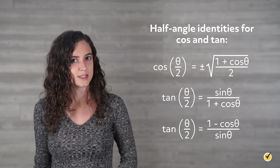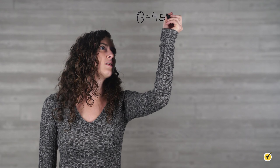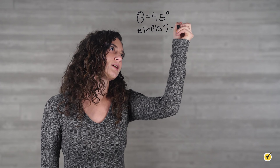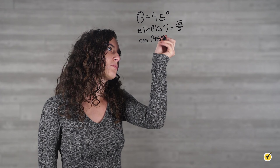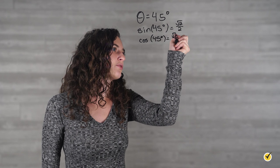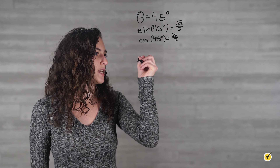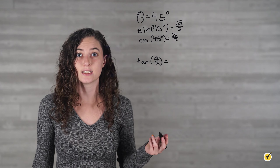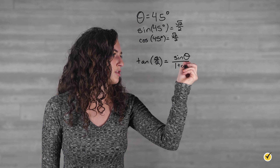Once again, our process is the same. Write down the information we're going to need, and then plug that information into our formula. We'll need to find the sine of theta, so the sine of 45 degrees is the square root of 2 over 2. And we also need the cosine of 45 degrees, which is also the square root of 2 over 2. Now we're going to write out our tangent half angle identity: the tangent of theta over 2 is equal to the sine of theta over 1 plus the cosine of theta.